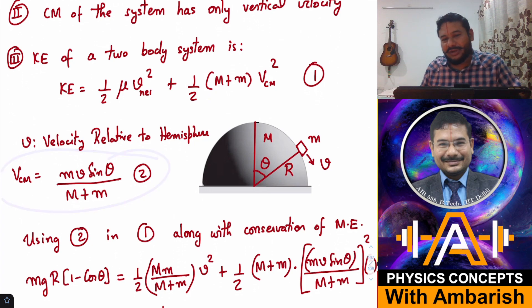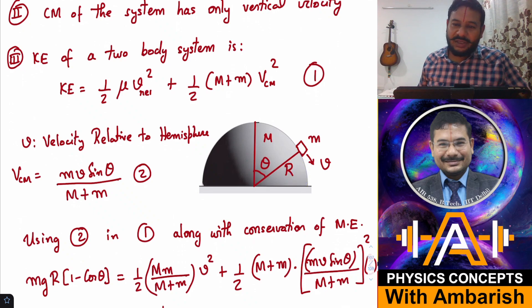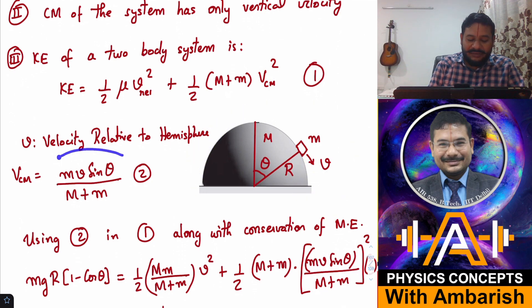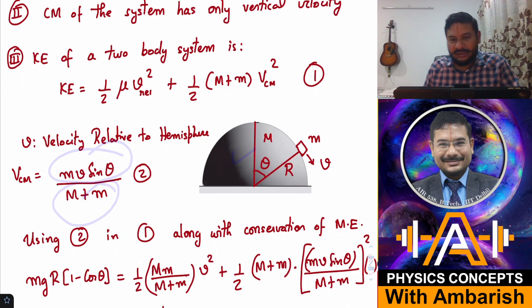What is the velocity of the center of mass? The velocity of center of mass is only vertical. This particle has velocity V in this direction relative to the hemisphere. So velocity in the vertical direction is V sin theta. Since the hemisphere does not have any vertical velocity, this V sin theta is also the vertical velocity from the ground frame. What is the velocity of the center of mass in the vertical direction? That is simply mV sin theta upon (M+m), because the hemisphere has no vertical velocity. And this itself is the total velocity of center of mass, because center of mass only has vertical velocity.